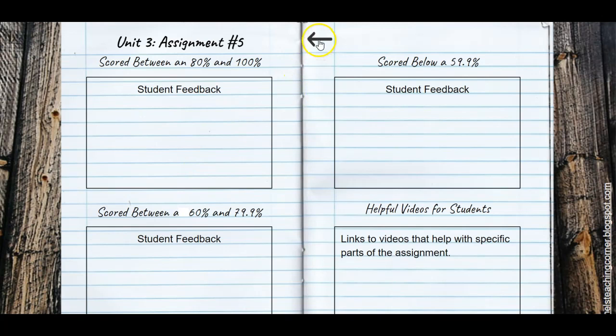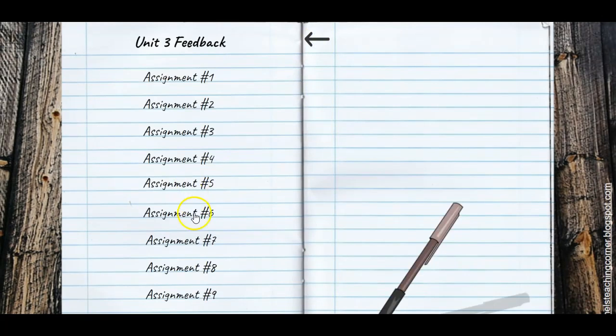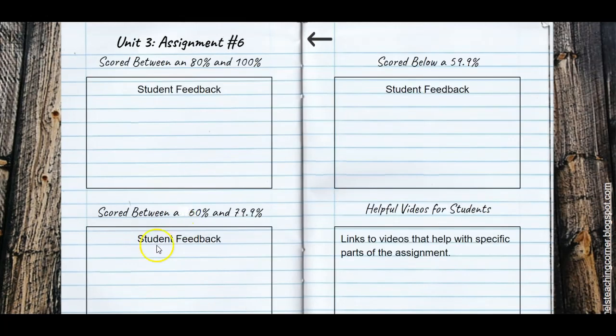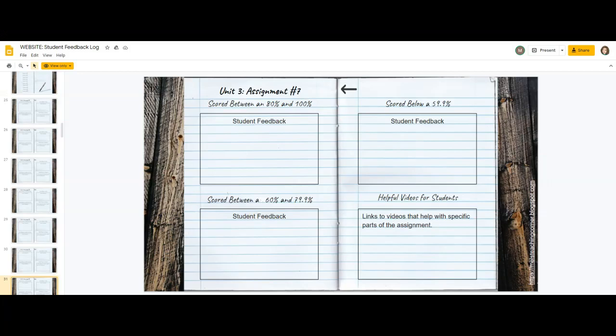If you're in the wrong assignment, say assignment five instead of six, hit the arrow back. You can do that as well. When you hit the escape button, it takes you right here so you can copy and paste your feedback.